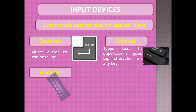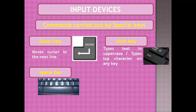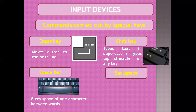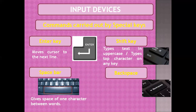The space bar is the longest key on the keyboard and is used to give a space of one character between words. The backspace key erases one character to the left of the cursor. If you have made any mistake and want to erase it, just press the backspace key and the character to the left of your cursor will be erased.